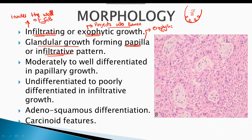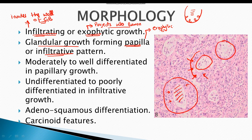As seen in the histology image, these are the glands formed by the malignant cells. The malignant tumor cells form glandular structures with a visible lumen surrounded by tumor cells. The tumor cells may be moderately to well differentiated in papillary growth, meaning these cells resemble the gallbladder epithelium.